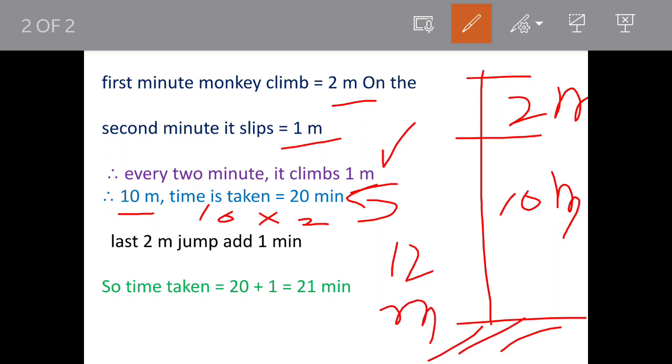When the monkey reaches 10 meters, the last jump is going to be 2 meters. In the last jump, the monkey is not going to slip down. So the last jump will take just 1 minute. Total time will be 20 plus 1 equals 21 minutes. This is our answer.